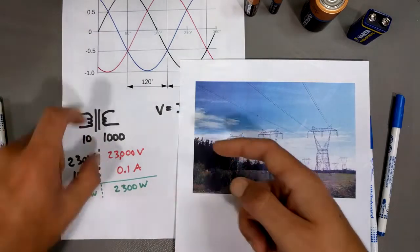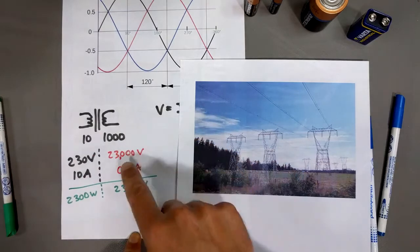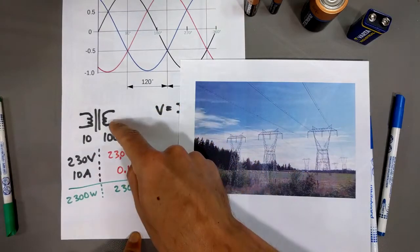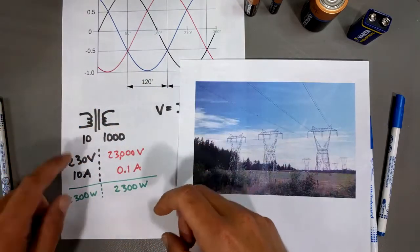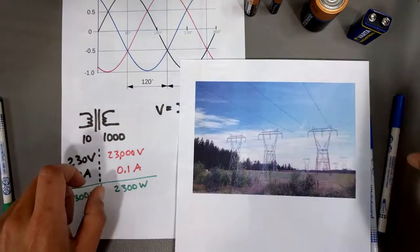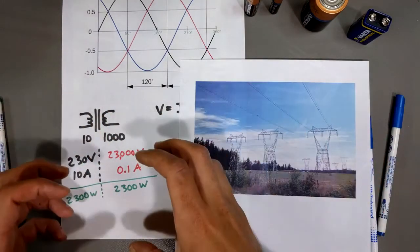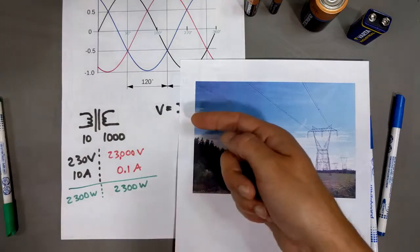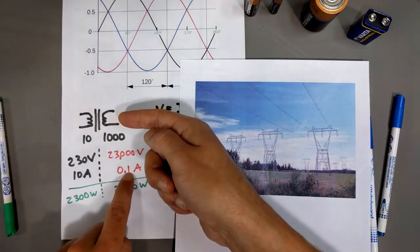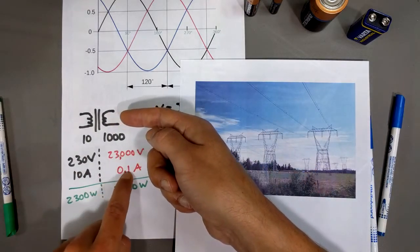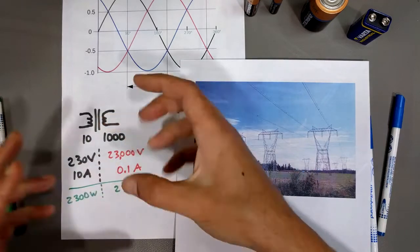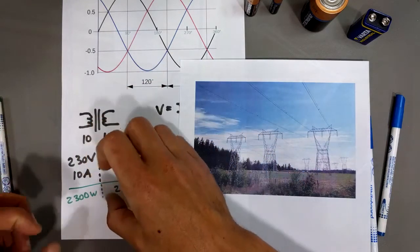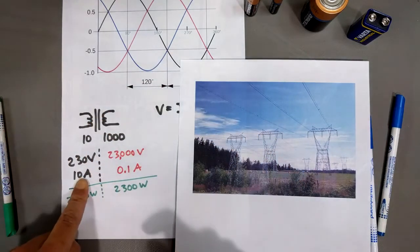And then when it gets to your neighborhood, they do the reverse of this. You basically have another transformer, but you feed this high voltage and low current into the transformer, and that steps it back down. This is a step up transformer before it's being sent out on the power lines. When it gets to your neighborhood, they do the reverse of this. Feed your high voltage and low current in, and that steps the voltage down to 230 volts, but it gives you all your current back.